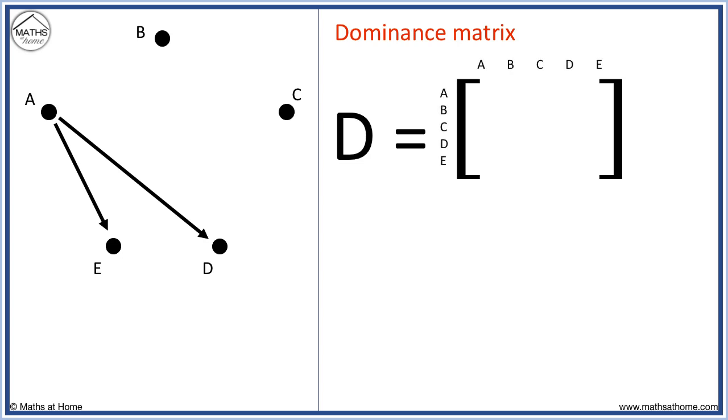We can also represent the same situation as a matrix. We call the matrix D to show that it is a dominance matrix. We label the rows and columns in alphabetical order to show the players.